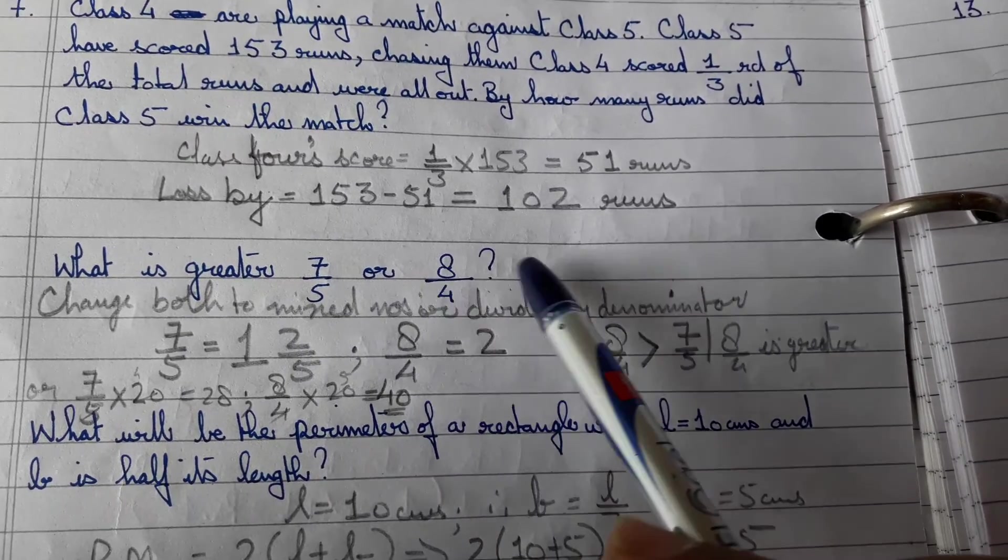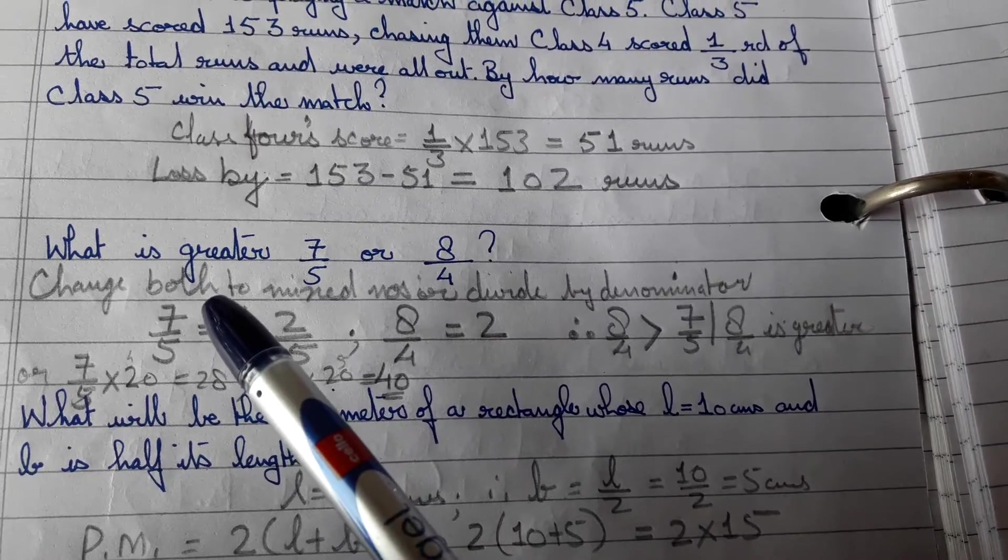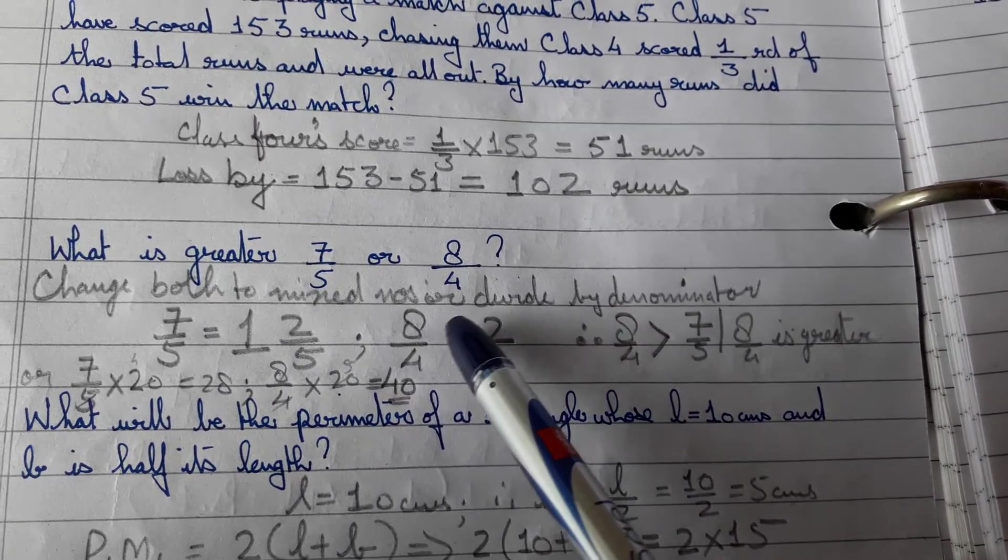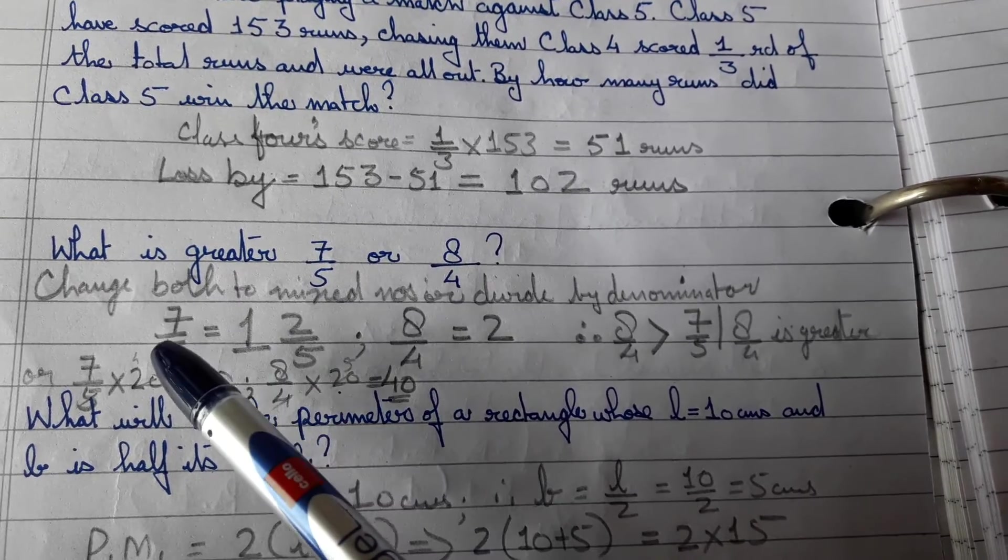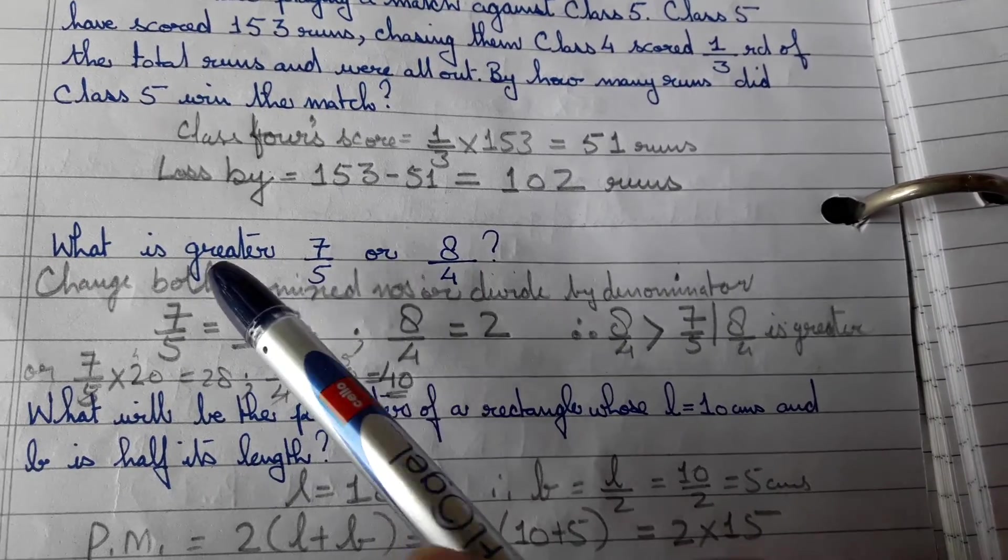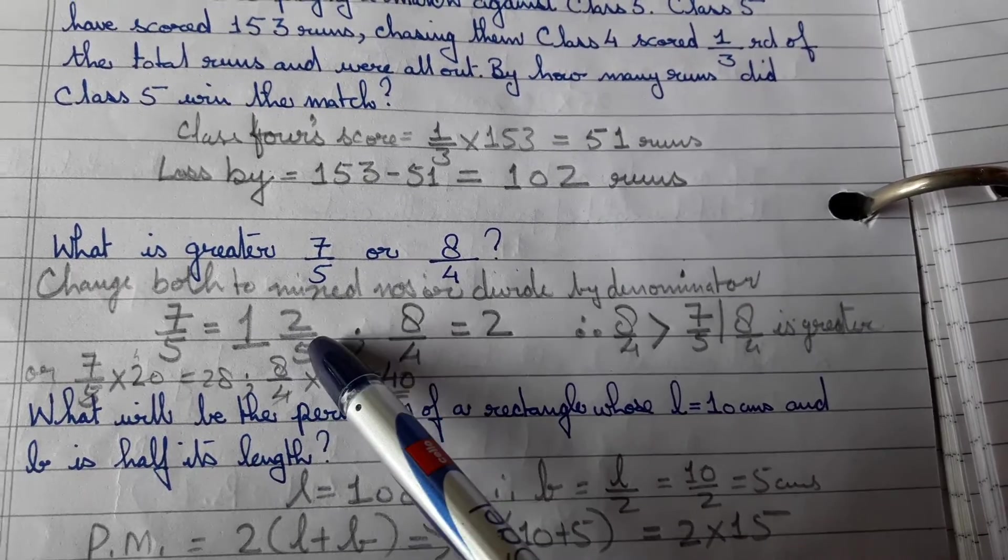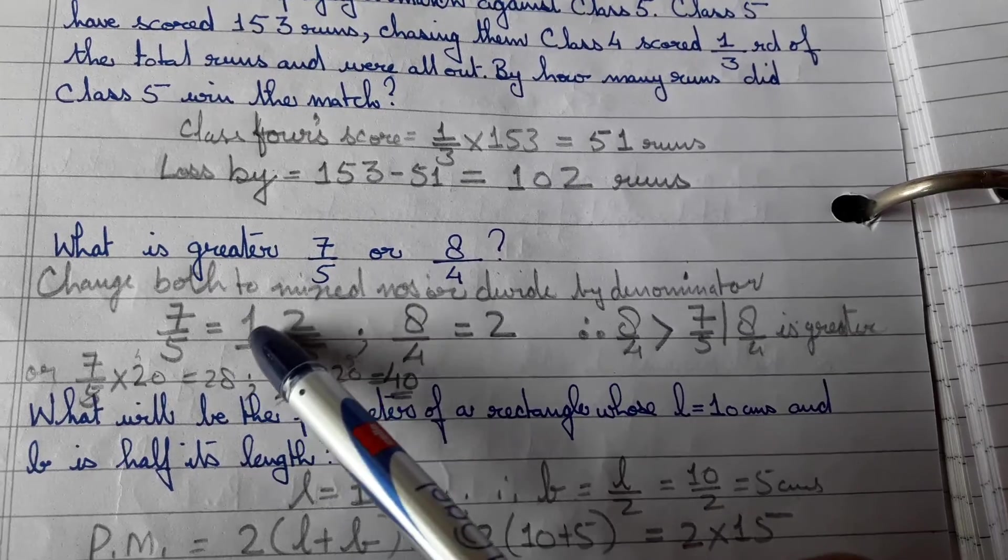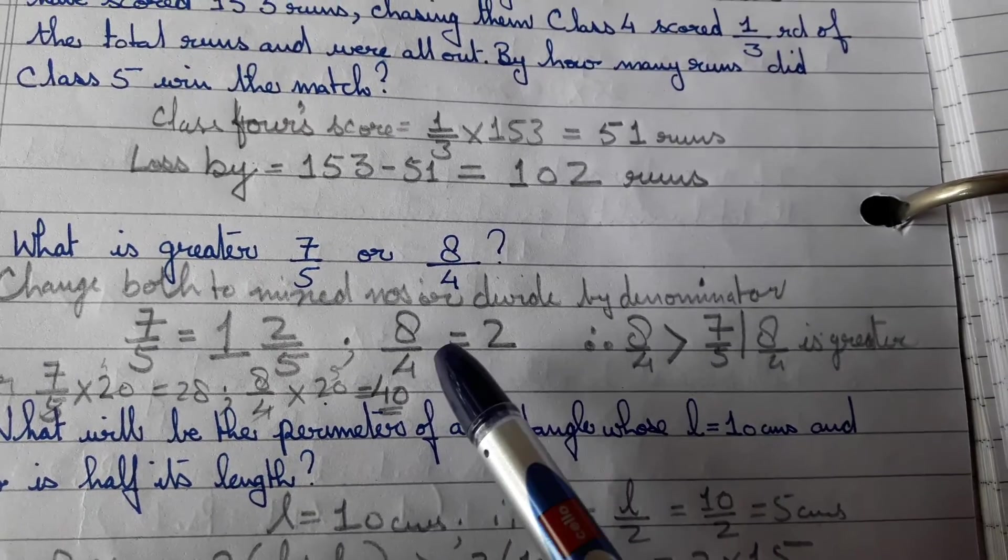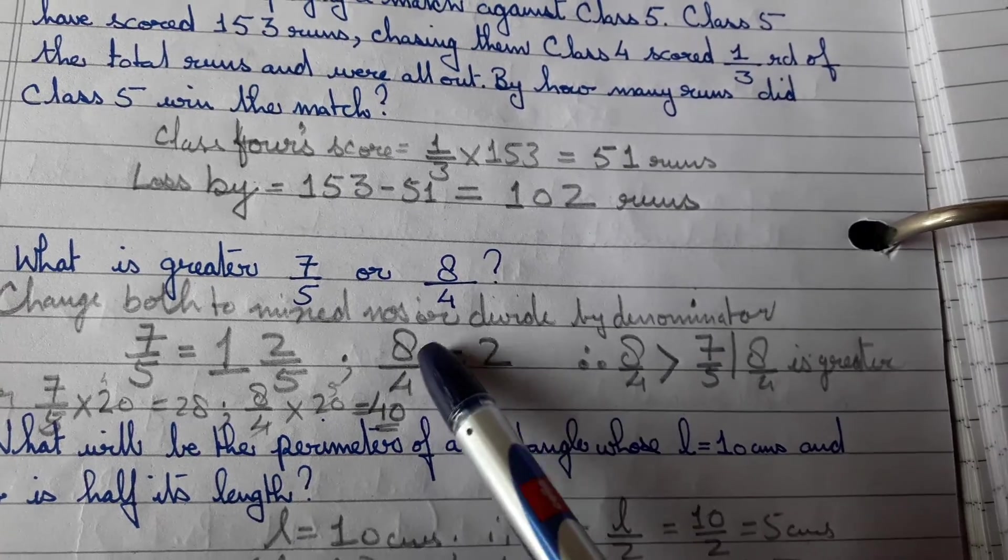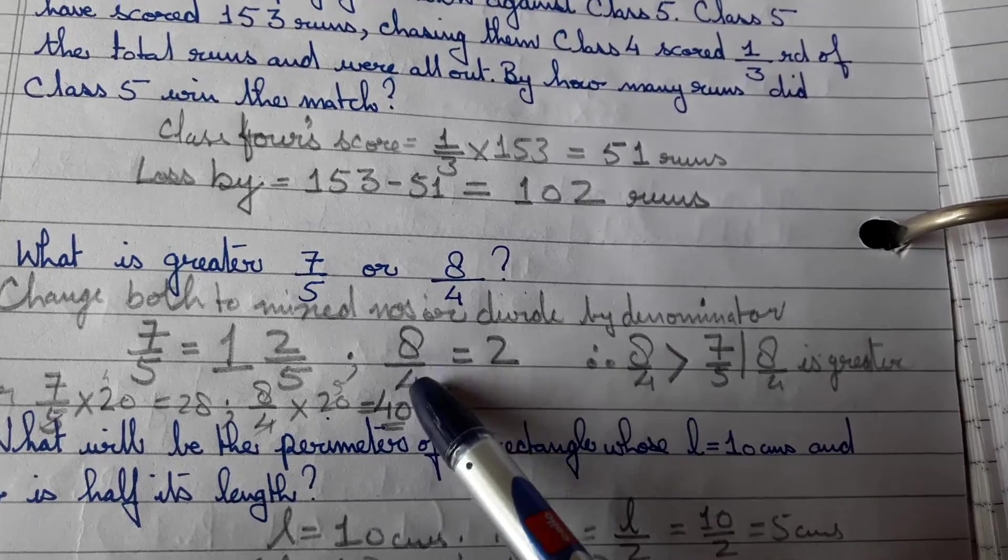What is greater, 7 by 5 or 8 by 4? See, there are two ways of doing it. First, you can convert both of them to mixed numbers or just divide by the denominator. So 5 once in 7 is 5 and 2 is left over 5. So 7 upon 5 means 1 and 2 by 5, so the quotient is 1. And here 8 by 4, the quotient is 2. So the quotient is greater, so therefore this fraction is greater.